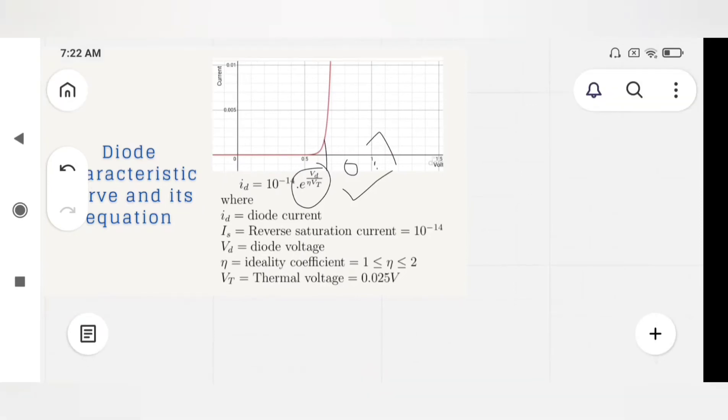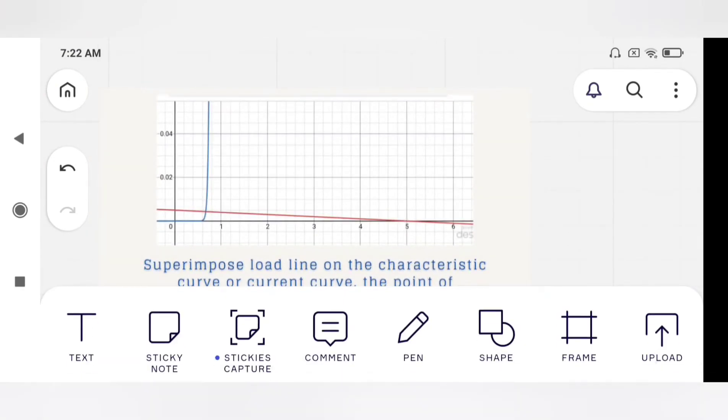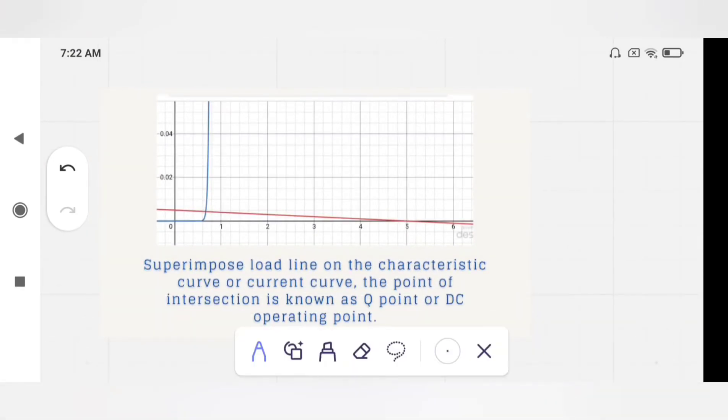Now come to the Q point. This is diode characteristic curve in blue and this is diode load line. If you superimpose diode load line over characteristic curve, we get Q point. This is Q point, the intersection point. You will find DC operating point here. This is its DC operating point or Q point. It is a graphical method of finding Q point.